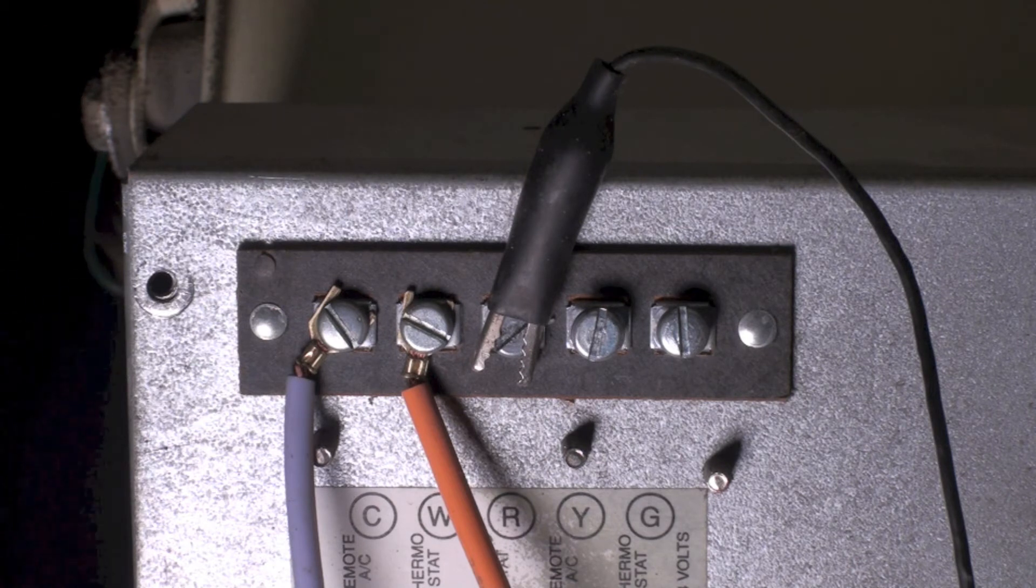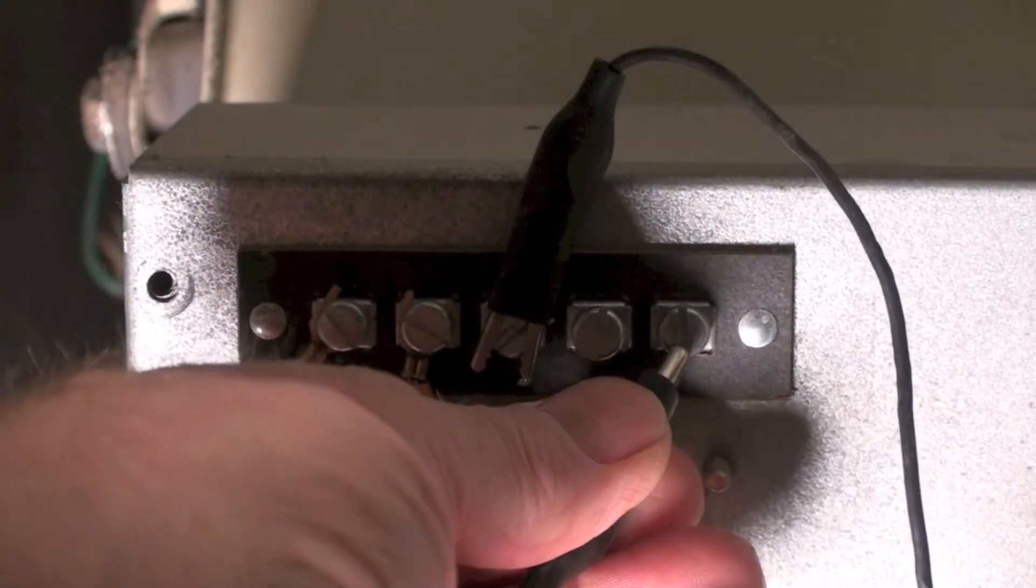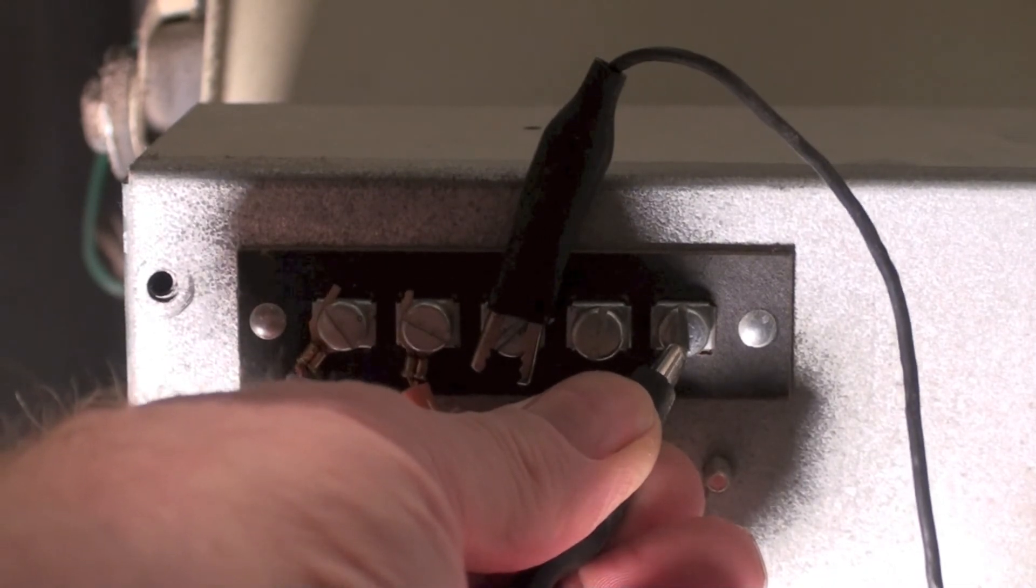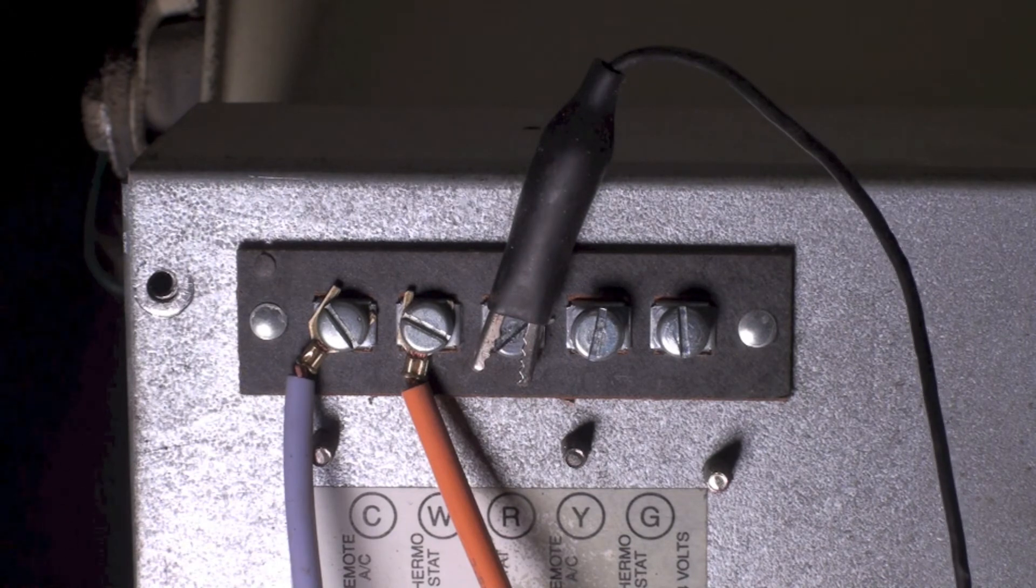In order to find out if there's power to the unit, there's a real simple way to do it. You just jumper right there. The fan came on - it went from R to G. Now you know you've got power.